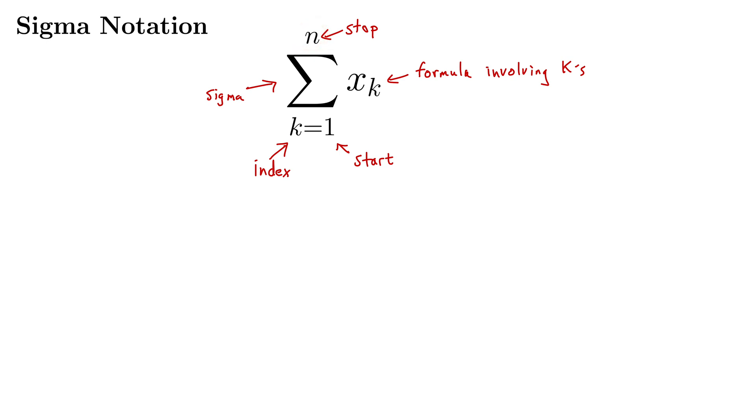Now this n up here can be infinity. We see that often in calc 2 where we're dealing with infinite sums all the time. So these need not be finite creatures.